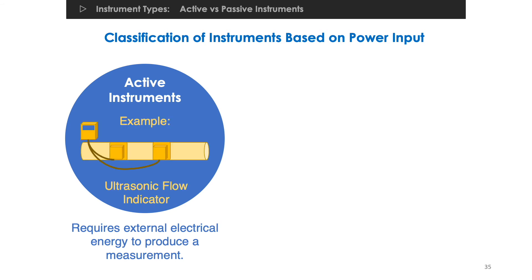For example, in an ultrasonic flow indicator, if the rate of liquid flow inside the pipe speeds up between the two contact points, this change is detected by the instrument and converted into an electrical signal and then sent to a data receiver. Obviously, for this system, an input power source must be supplied to the system.